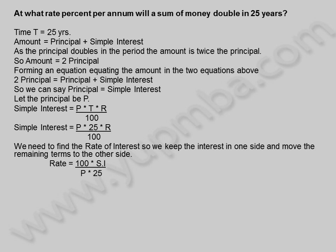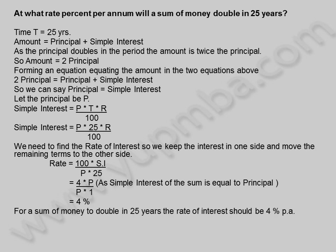Rate is equal to 100 into simple interest divided by principle into 25, which equals 4 into principle divided by principle into 1, since simple interest equals principle. Rate is equal to 4 percent. For a sum of money to double in 25 years, the rate of interest should be 4 percent per annum.